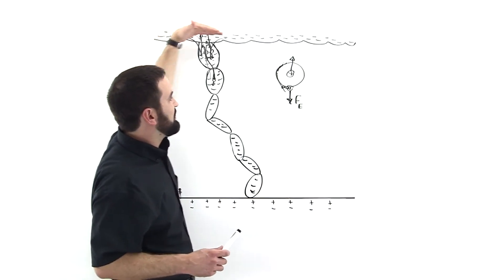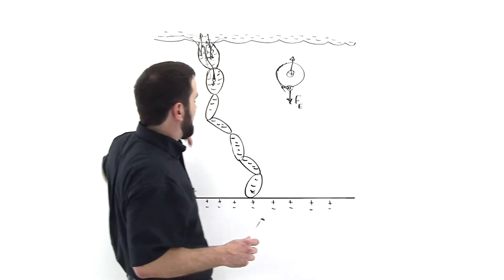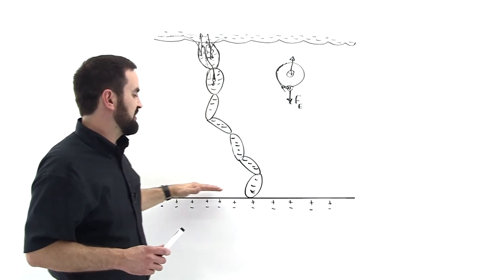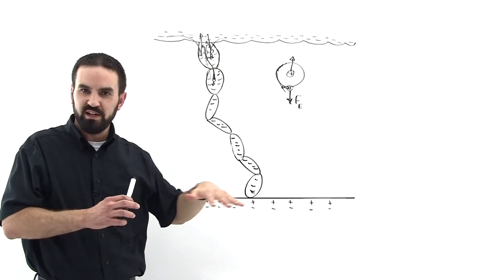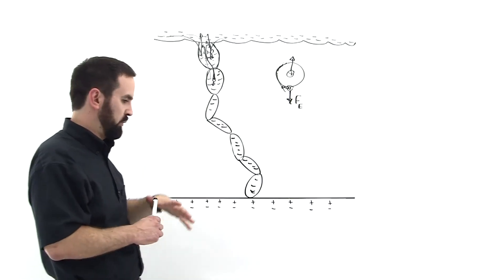But due to this large negative cloud above it, the earth becomes positively charged on its surface in that local region, of where the cloud is.